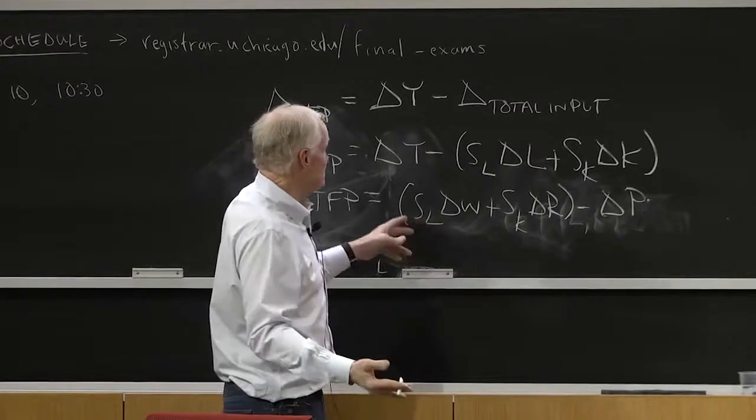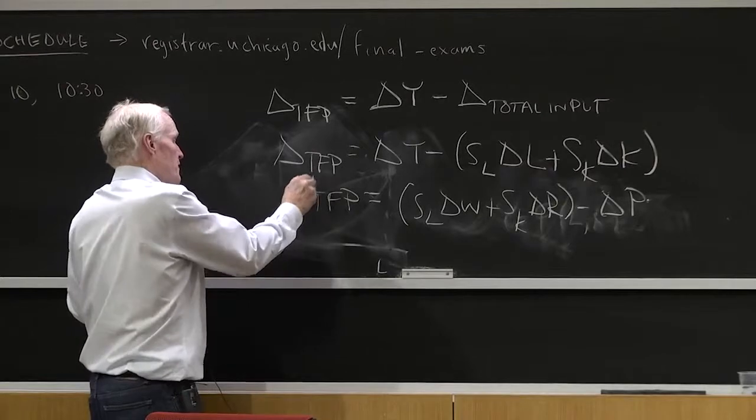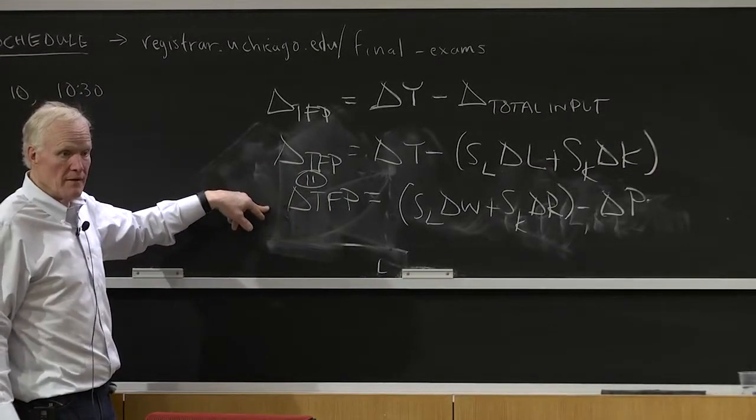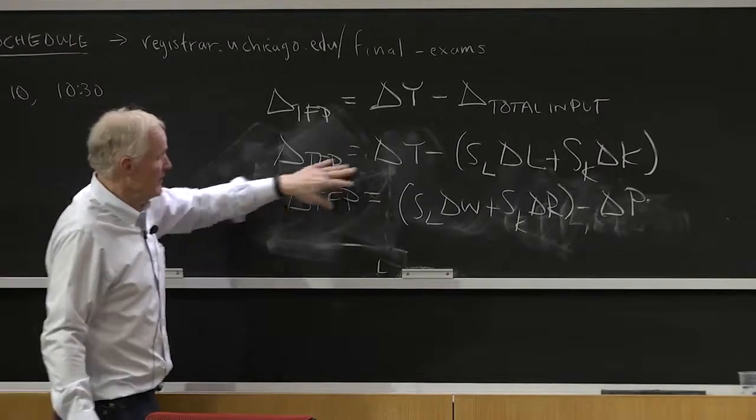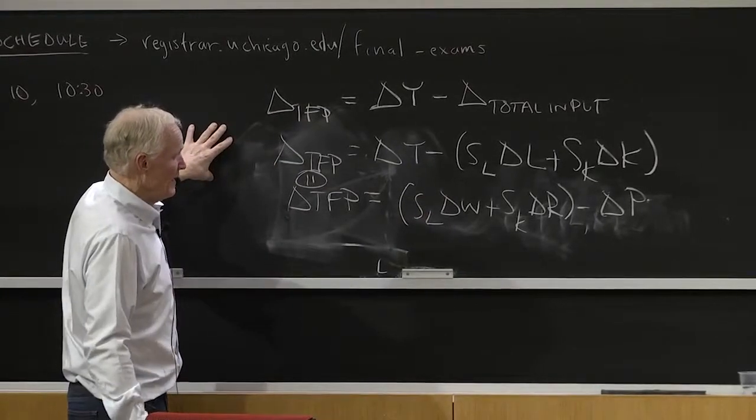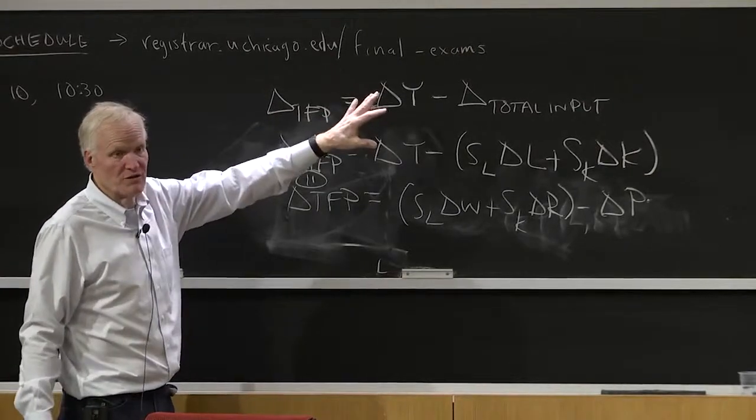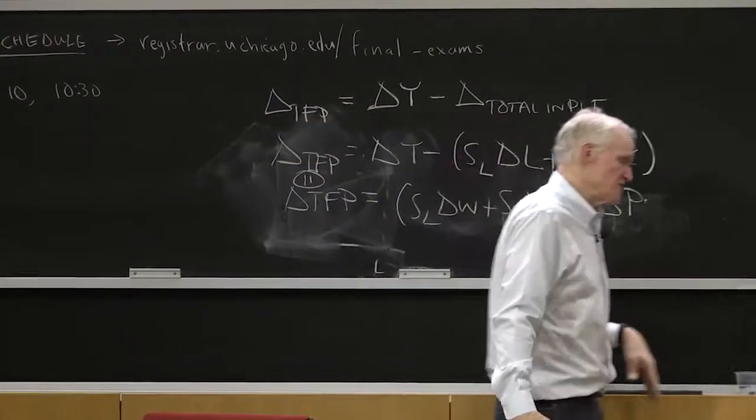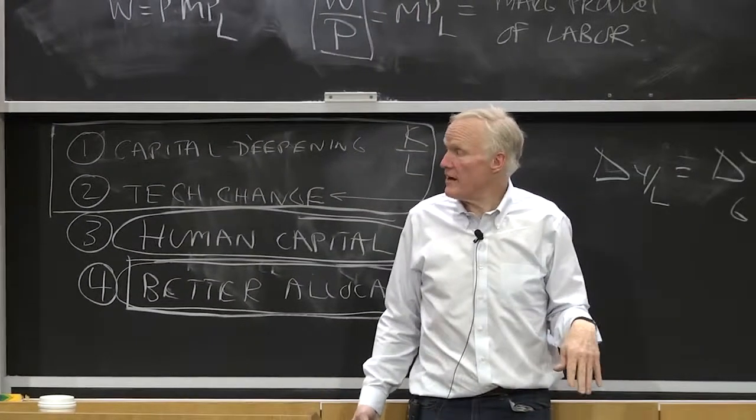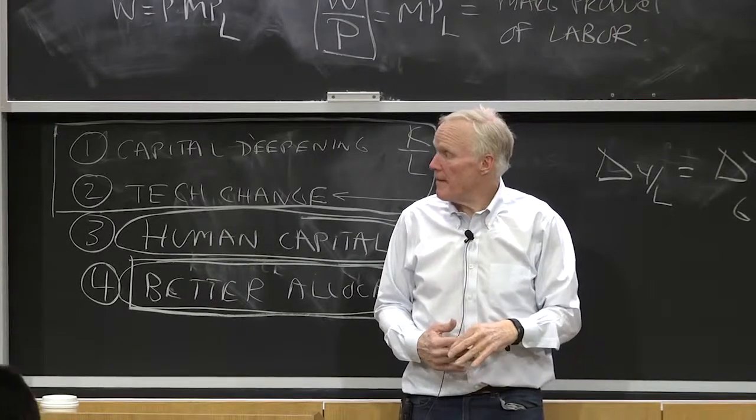In fact, with constant returns to scale, it's easy to show that these two numbers are equal to each other. That is, they're equal. These two have to be the same, just because of the accounting. If you move delta Y and delta P over to one side and all the other ones over the other side, it's just growth in the value of outputs minus the growth in the value of inputs. And if you have constant returns to scale, outputs and inputs have to be growing at the same rate in terms of value. Factor exhaustion would tell you that.